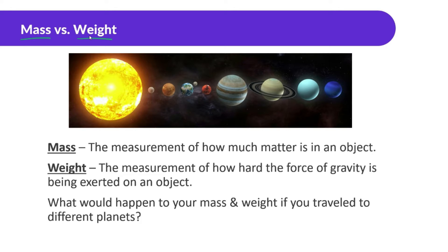Mass is the measurement of how much matter, or how much stuff, is in an object. Weight is a measurement of how hard the force of gravity is being exerted on an object — that's the key word here: how hard the force of gravity is being exerted on an object.